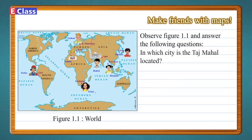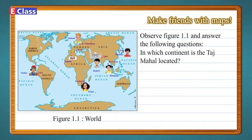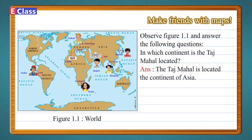In which city is the Taj Mahal located? Answer: The Taj Mahal is located in the city of Agra. In which continent is the Taj Mahal located? Answer: The Taj Mahal is located in the continent of Asia.